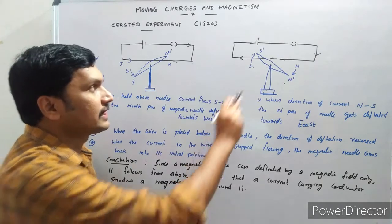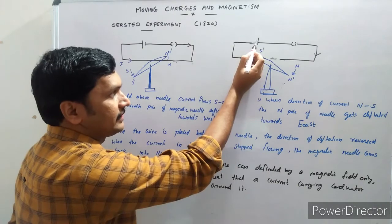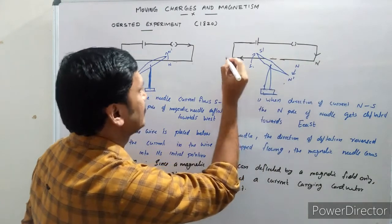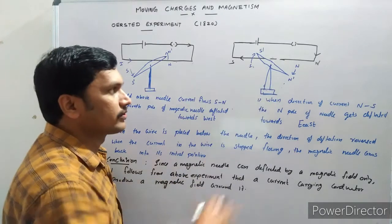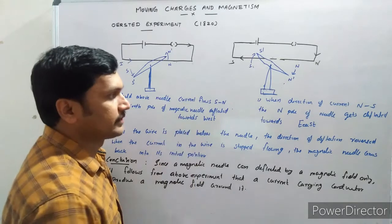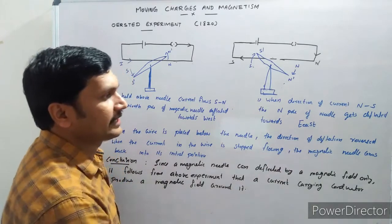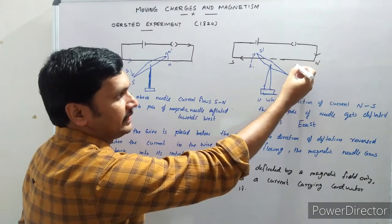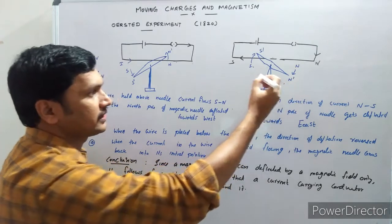Then he reversed the current by changing the battery polarity. Now the current is flowing from north to south. The magnetic needle is placed just below the current-carrying conductor. Oersted observed that when the direction of current is from north to south, the north pole of the needle gets deflected towards east.